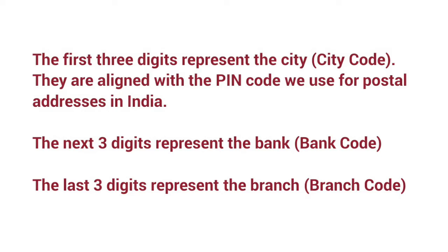The MICR code comprises three parts. The first three digits represent the city code, which is aligned with the PIN code used for postal addresses in India. The next three digits represent the bank code. The last three digits represent the branch code.